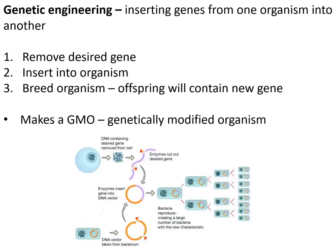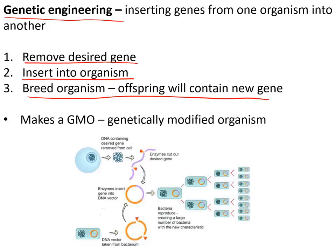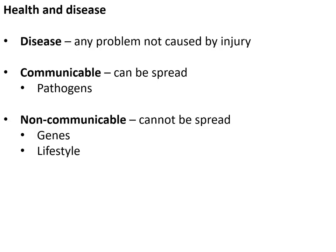Genetic engineering involves taking genes from one organism and inserting them into another to create an organism with new characteristics. You remove the desired gene from the organism that has it, put it into the target organism, then breed that organism — and all its offspring will contain that new gene with that new characteristic.